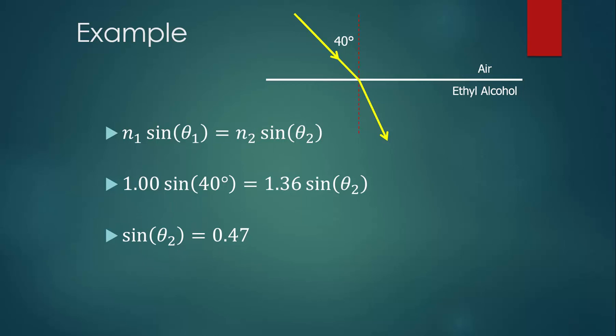We can find that the sine of theta 2 equals 0.47, and then in our calculators we can do inverse sine of 0.47 to find out that theta 2 must be 28 degrees. If you're not sure how to do that math in your calculator, talk to me in class.